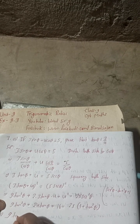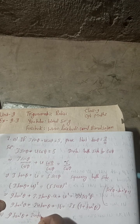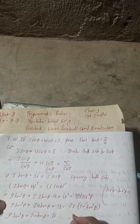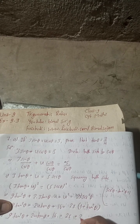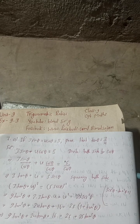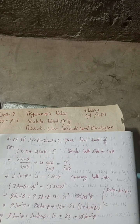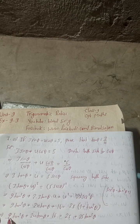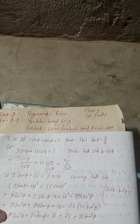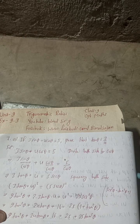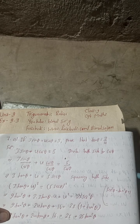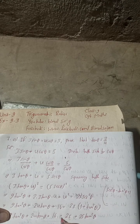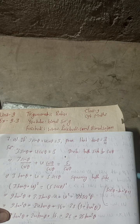Expanding the right side: 9 tan² θ plus 24 tan θ plus 16 equals 25 plus 25 tan² θ. Bringing all terms to one side: 9 tan² θ minus 25 tan² θ gives minus 16 tan² θ, plus 24 tan θ, and 16 minus 25 gives minus 9, equals 0.